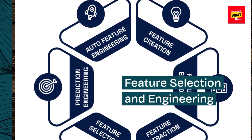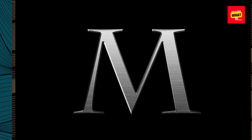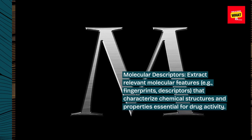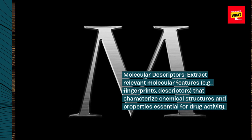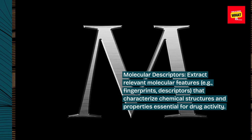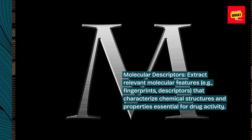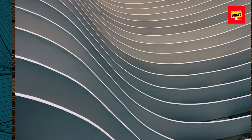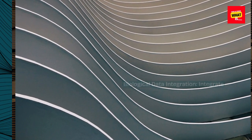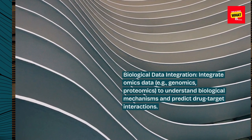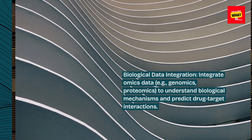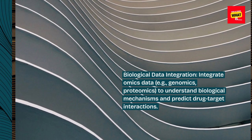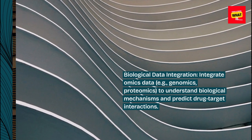Feature selection and engineering. Molecular descriptors: Extract relevant molecular features, e.g., fingerprints and descriptors, that characterize chemical structures and properties essential for drug activity. Biological data integration: Integrate omics data, e.g., genomics and proteomics, to understand biological mechanisms and predict drug-target interactions.